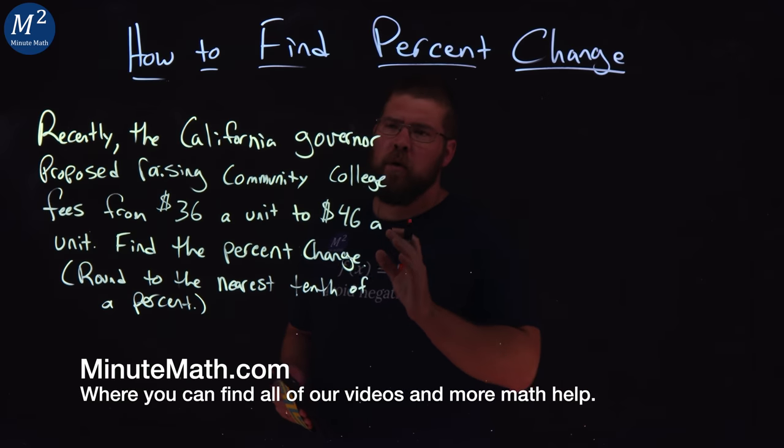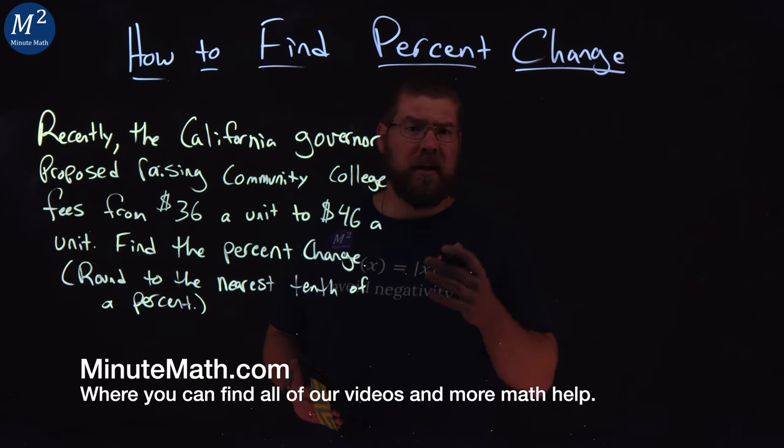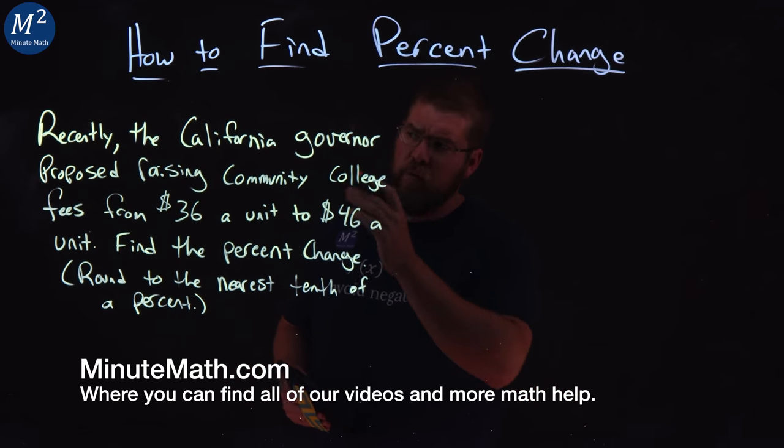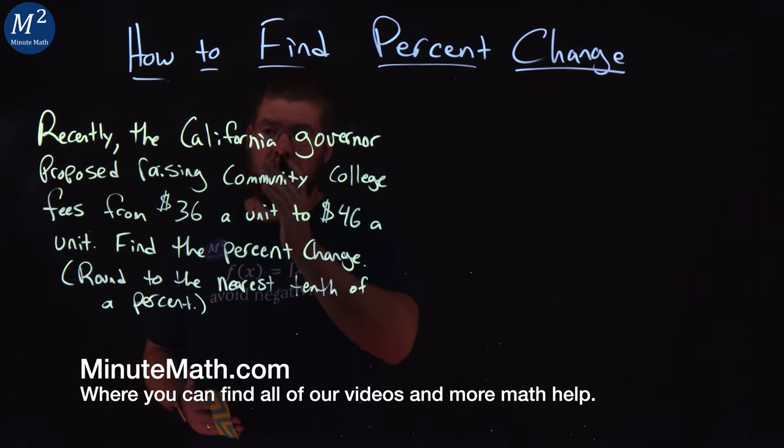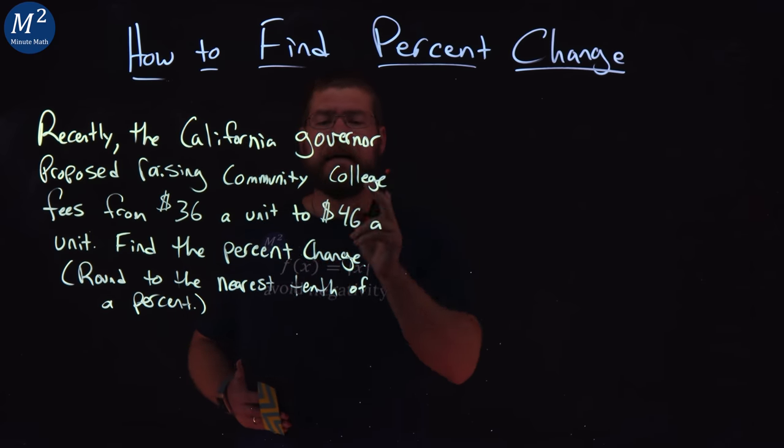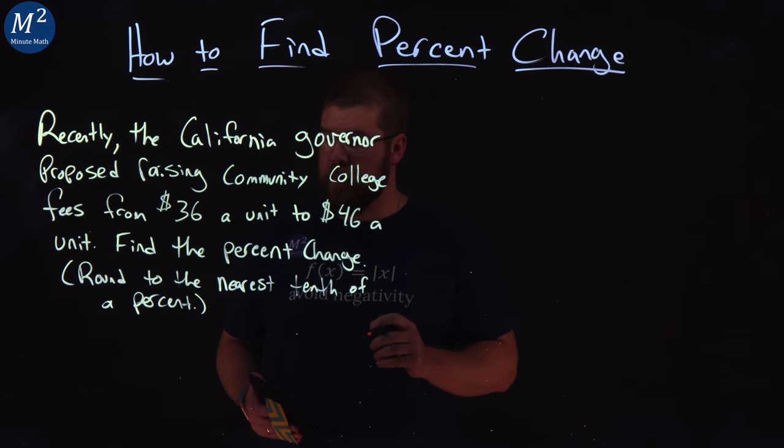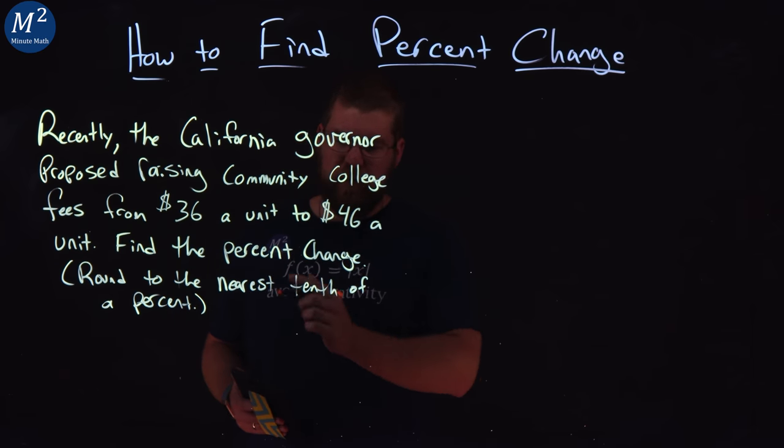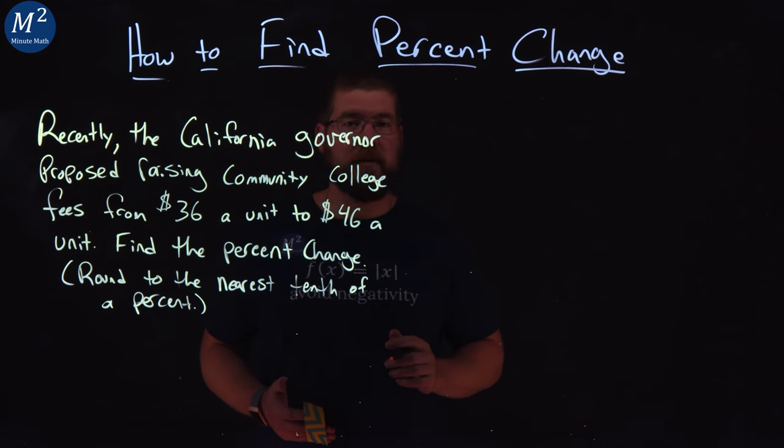We're given this word problem here to find percent change, and we'll go through the steps. Recently, the California governor proposed raising community college fees from $36 a unit to $46 a unit. Find the percent change, round to the nearest tenth of a percent.